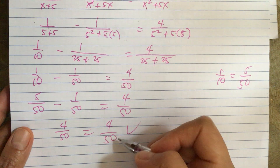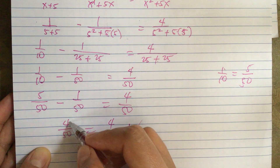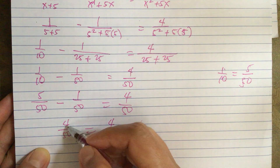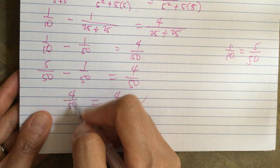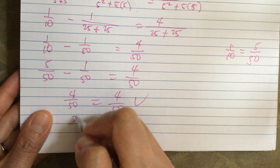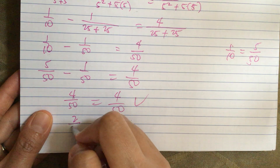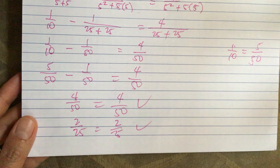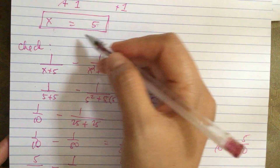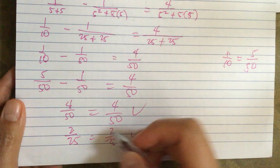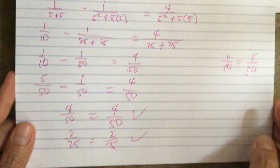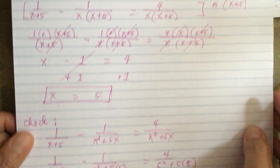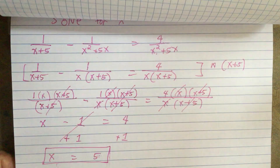The left side equals 4 over 50 and the right side equals 4 over 50 — they're the same. We can also simplify by dividing by 2, giving 2 over 25 on both sides. So our answer x equals 5 is correct because the left side equals the right side. They didn't ask us to check, but it's good to verify the answer is correct.